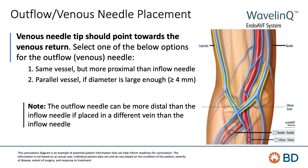The venous needle can also be placed in a parallel vessel if the diameter is equal to or larger than 4 mm. Note that the outflow needle can be more distal towards the wrist than the inflow needle if it is placed in a different vein than the inflow needle. This is due to the split flow nature of the fistula.